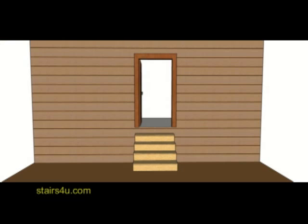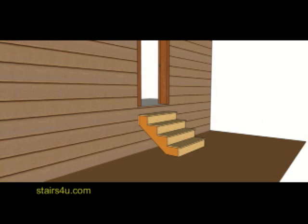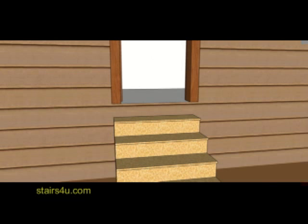Next is a set of stairs going up to an exterior door opening. You see this a lot in mobile homes and trailers, which might have different codes. These building codes are for permanent structures, so check with your local building department.